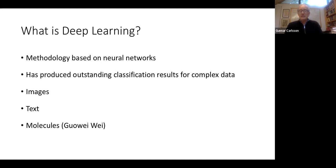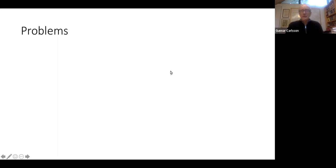What is deep learning? It's a methodology based on neural networks. Neural networks are directed graphs that define computations. The key thing is it has produced outstanding — sometimes what I would regard as miraculous — classification results for complex data types such as images, text, and molecules. With images, for example, you can take a dataset consisting of handwritten digits — MNIST would be one — and classify the digits extremely accurately.